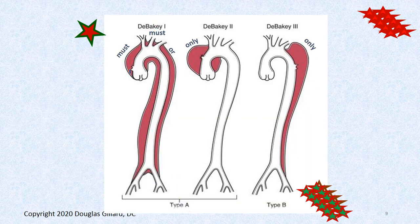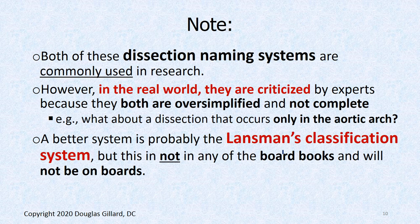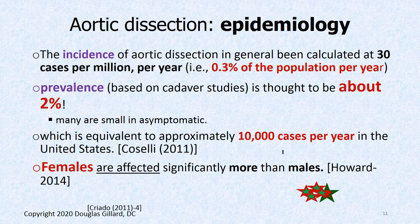So here's a summary: DeBakey 1 must involve the ascending aorta and must go further. DeBakey 2 is isolated to the ascending aorta. DeBakey 3 is only the descending aorta — it can be just a little piece. In reality, there's a more complicated Landsman's classification system that is beyond our scope, but that is much more detailed.